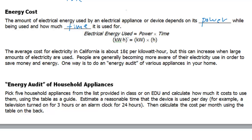A typical hair dryer is a thousand watts, so if you keep that hair dryer on for one whole hour, it will have used one kilowatt-hour of energy. The average cost for electricity in California is about 18 cents per kilowatt-hour, but this can increase when large amounts of electricity are used. People are generally becoming more aware of their electricity use to save money and energy. One way is to do an energy audit of various appliances in your home, and in a few minutes I'm going to show you my electric bill to show how this pricing works.